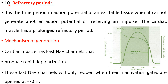Property ten: the refractory period. This is the time period in the action potential of an excitable tissue where it cannot generate another action potential on receiving an impulse. The cardiac muscle has a prolonged refractory period compared to skeletal and smooth muscles as well as nerve fibers. Cardiac muscle has fast sodium channels that produce rapid depolarization, and these fast sodium channels will only reopen when their inactivation gates open at minus 70 millivolts.